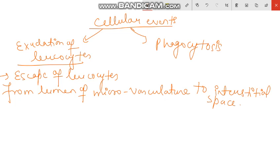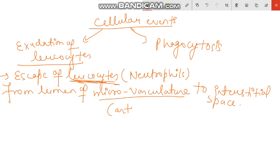Leukocytes — especially in acute inflammation, neutrophils — move from blood vessels into interstitial spaces. This occurs in the microvasculature, which includes arterioles, venules, and capillaries. This process is called exudation of leukocytes.